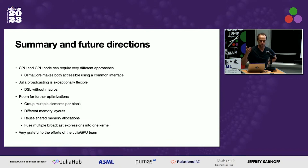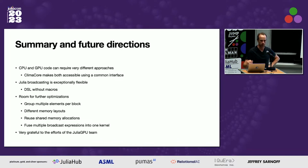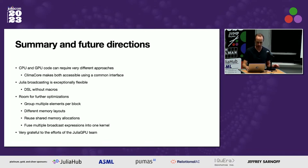The core summary: GPU and CPU code can require very different algorithms underneath — that's just the nature of it — but we can make them accessible using a common interface. Broadcasting is exceptionally flexible; it's sometimes a DSL without macros. There's a lot of optimization we can still do — grouping multiple elements, different memory layouts, etc. I'm very grateful to the efforts of the Julia GPU team, who we frequently cause issues for. It's a testament to the amount of effort the compiler writers have done that we can actually do this — those functions are often just random functions people have written that do all sorts of complicated things, and they just run natively on the GPU.